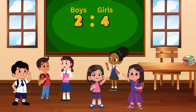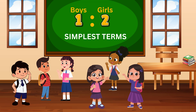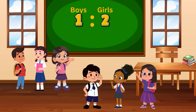Just like fractions, we can simplify ratios. To simplify a ratio, we divide the numbers in the ratio by their highest common factor. In this case, the largest number that can divide into both two and four is two. So we divide both numbers in the ratio by two to put the ratio in its simplest terms. That's one to two. This means that for each boy in the class, there are two girls.